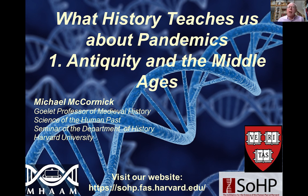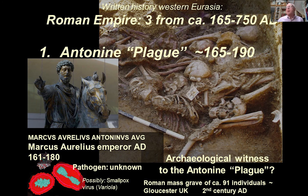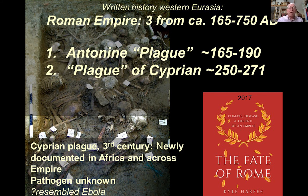The written history of Western Eurasia teaches us that there were at least four major pandemics — three under the Roman Empire and one at the end of the Middle Ages, at the beginning of modern Europe. Under the Roman Empire, the big three were the Antonine Plague in the middle of the second century — pathogen unknown; Galen described it and thought it might have been smallpox, but there's no biological evidence of that. The Cyprian Plague was unknown practically until 2015, when Kyle Harper, a former PhD in this department, resurrected a lot of unknown written evidence documenting it. Pathogen unknown, it resembles Ebola.